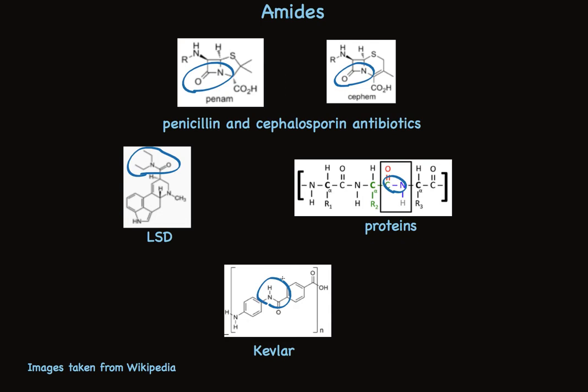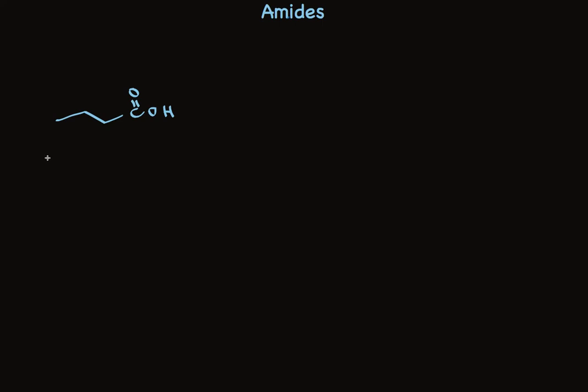Let's take a look at how they're named. If you can name carboxylic acids, you can name amides. So this molecule is butanoic acid. To name the corresponding amide, we'll drop the OIC and acid and replace it with the word amide. All one word, butanamide.